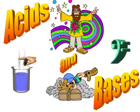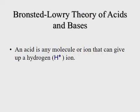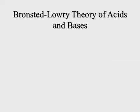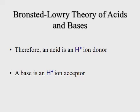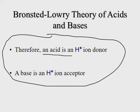In this video we're going to look at our second theory of acids and bases: the Brønsted-Lowry theory. Acids are defined as molecules that can produce and give up H+, while bases are defined as molecules or ions that can combine with and accept H+. Another way to put it: acids are H+ ion donors and bases are H+ ion acceptors. This is a key concept to refer back to when identifying acids and bases in an equation.